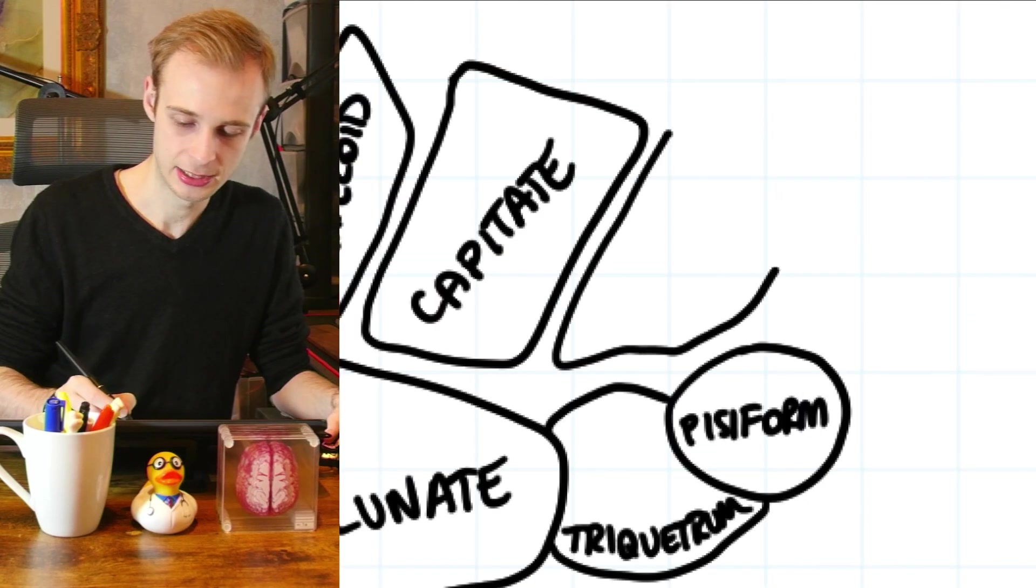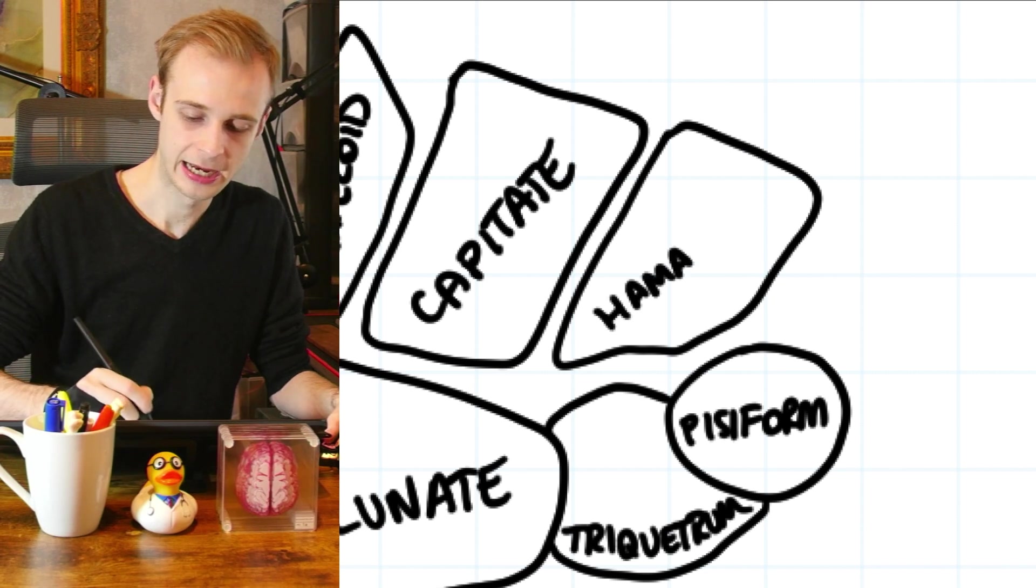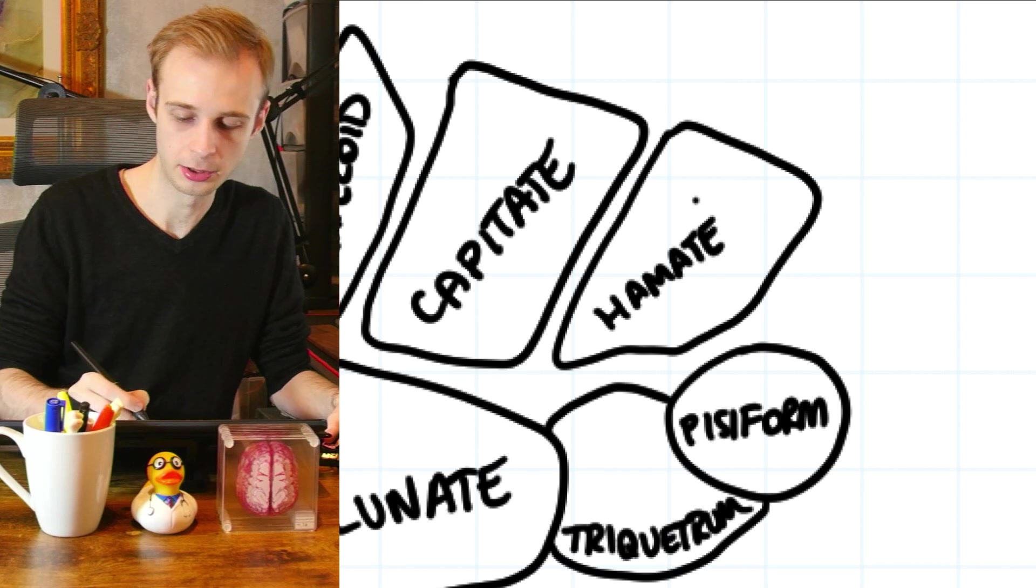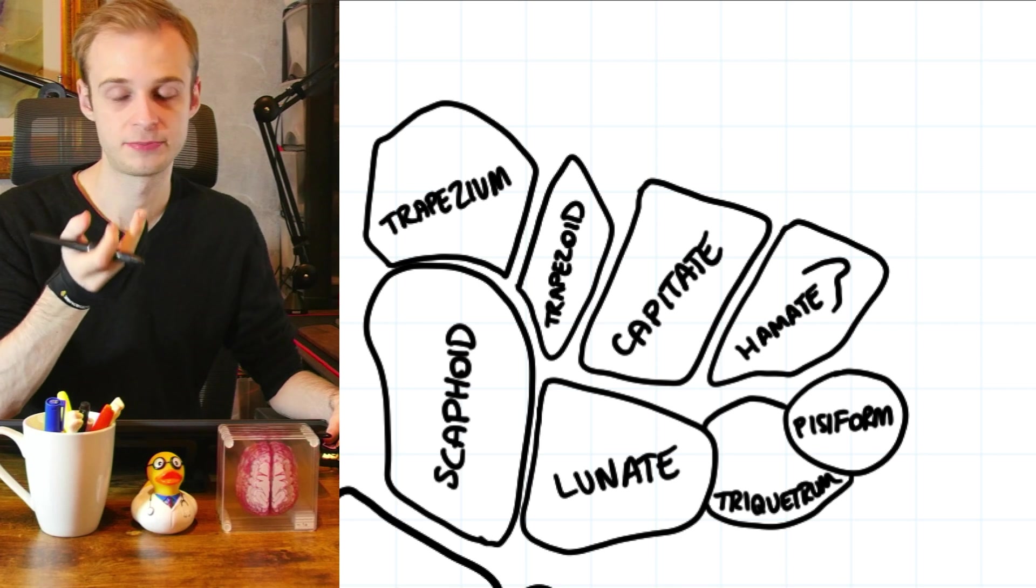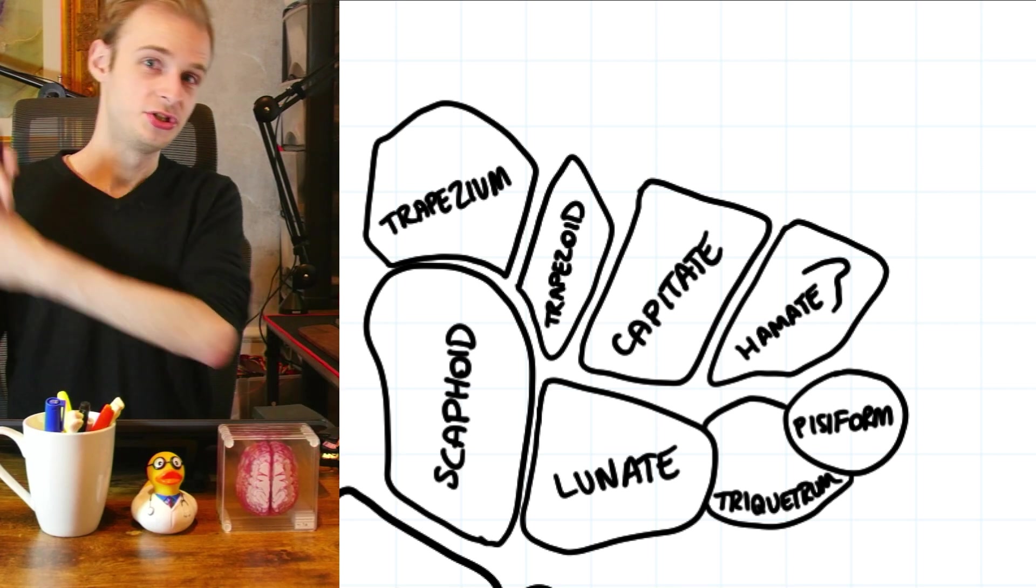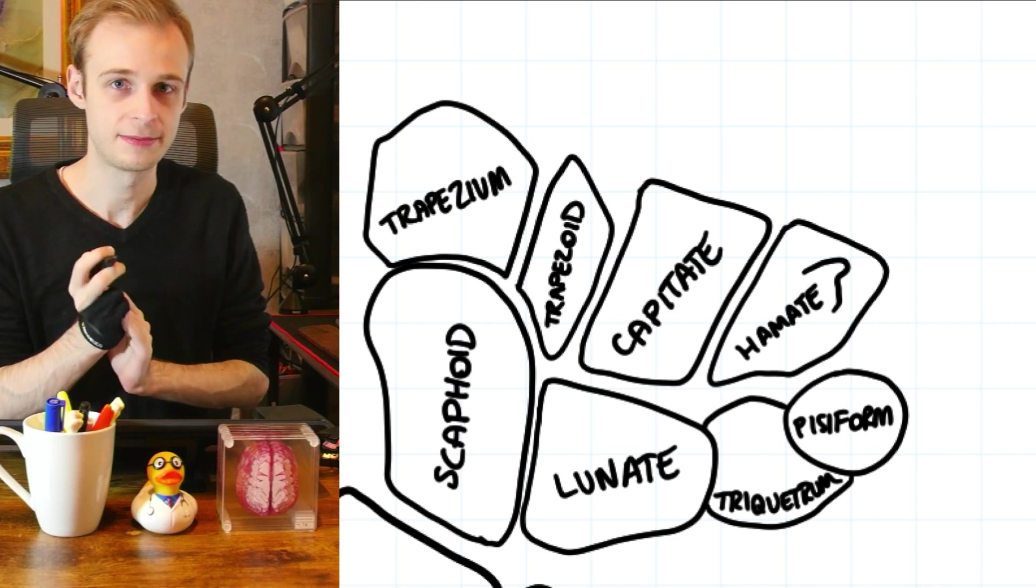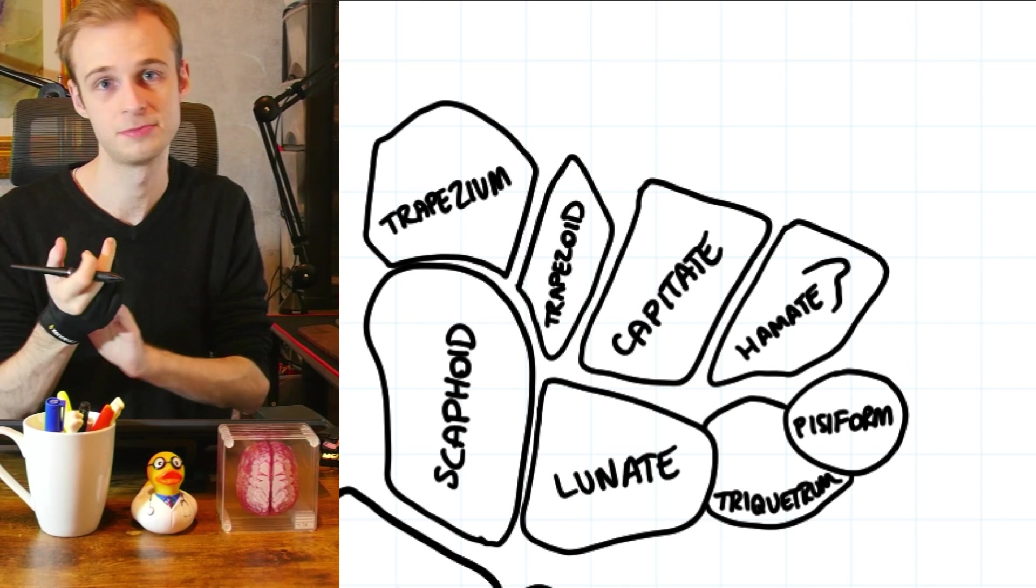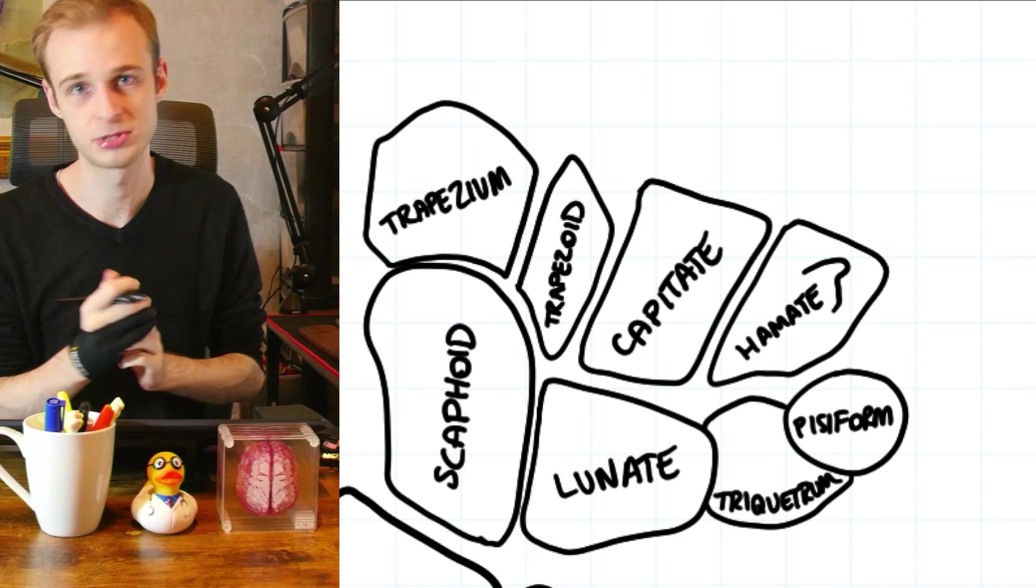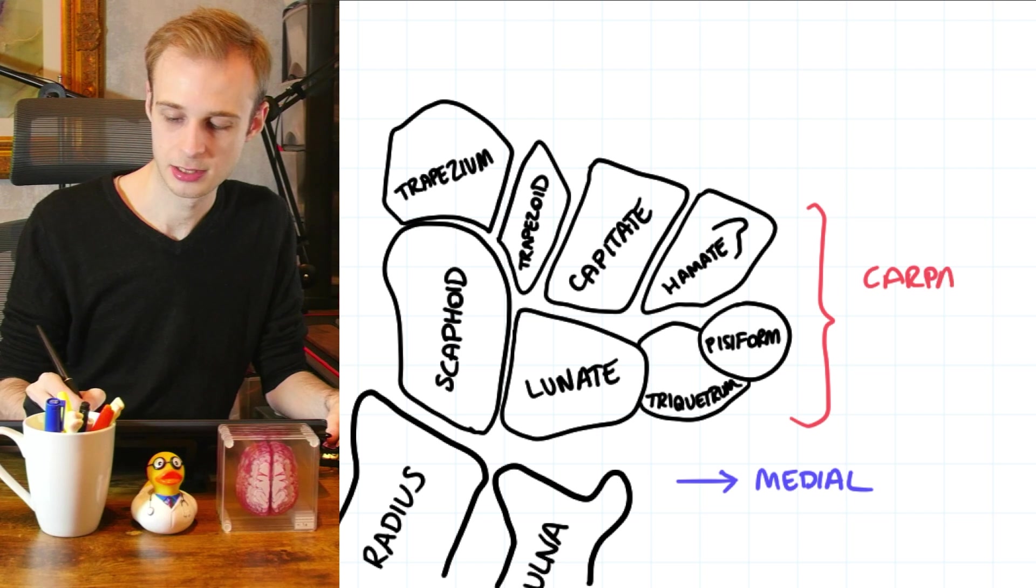And then the last one that we're going to add in to complete the distal row is called the hamate from hamulus which means a little hook. The hamate has this little hook shaped process on the bone which is classically injured during the swing of a golf stroke. It's called a golfer's fracture when this little hook shaped process gets fractured off if someone hits the ground abruptly with their golf club. And all of these together we refer to as the carpal bones or the wrist bones.